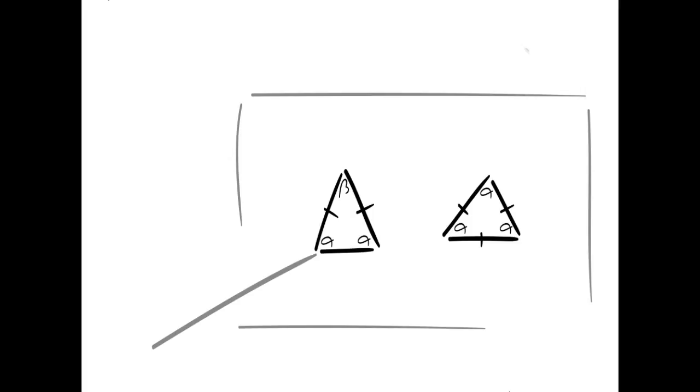Our first one here is an isosceles triangle. An isosceles triangle is a triangle that has two sides equal. And a lot of times in the diagram, you will just see two marks like that. And if each side is marked with the same mark, then that means those two sides are equal to each other.